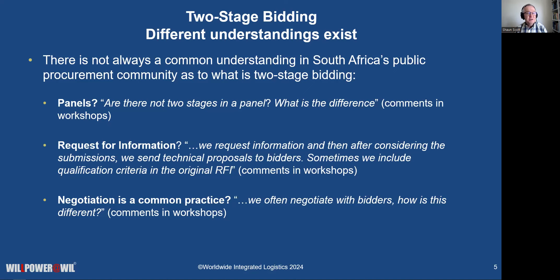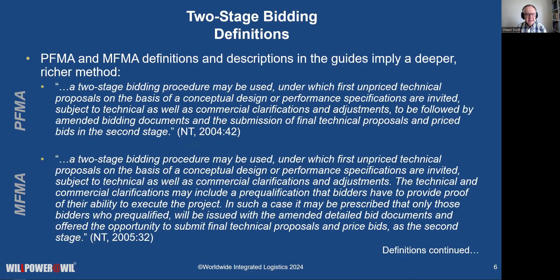One of the questions I had in a workshop recently was: isn't two-stage where we do an RFI, then we issue the tender document, and then we continue with the process? And then when I say that negotiations is very often part of a two-stage, people say, but we do negotiate. So what's different? Why is this different? What is different about two-stage bidding to what we're doing?